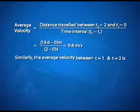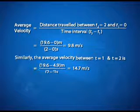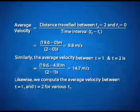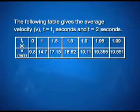Similarly, the average velocity between t = t₁ and t = 2 is computed for various values of t₁. The following table gives the average velocity v between t = t₁ seconds and t = 2 seconds. Here t₁ varies from 0, 1, 1.5, 1.8, 1.9, 1.95, and 1.99 seconds, and accordingly the velocity is 9.8, 14.7, 17.15 meters per second, and as it approaches 2, it becomes 19.551 meters per second.